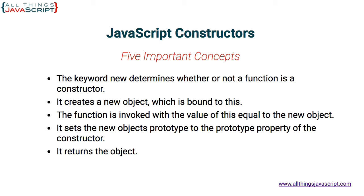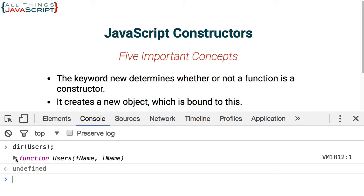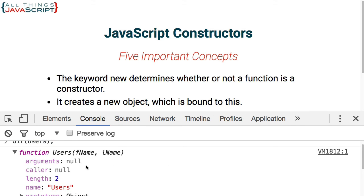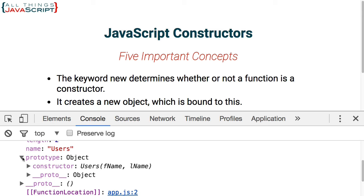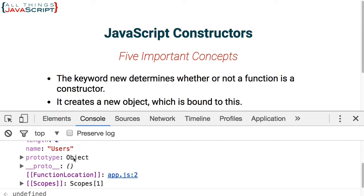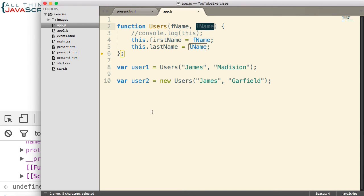Now we're going to look at the last two concepts: it sets the new object's prototype to the prototype property of the constructor, and it returns the object. Let's open the console and do a dir of the users function. This displays information about that function. Notice it has certain properties — JavaScript functions are objects — and one of those properties is the prototype property, which has something attached to it. That is what becomes the prototype of the new objects that are created.